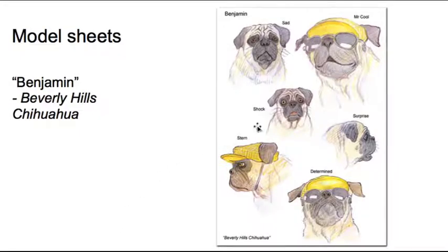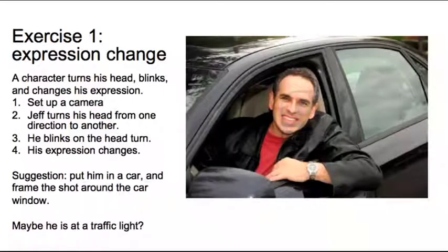Here are some expression sheets I did on Beverly Hills Chihuahua for a character called Benjamin. We were doing muzzle replacement, but we still had to make a broad range of facial expressions to make the characters work. So here's an exercise: have a character turn his head, blink, and change his expression. I suggest putting the character in a car — then you're not worried about movement and you just frame the shot around the car window. You can get free cars at TurboSquid. Have the character — it can be any rig like Norman, Morpheus, or Andy — turn his head from one direction to another and show the expression change.